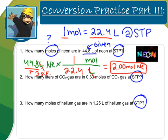Okay, let's try number two. How many liters of carbon dioxide gas are in 0.33 moles of carbon dioxide gas at STP? So 0.33 moles is my given of carbon dioxide, and I'm converting to liters this time.